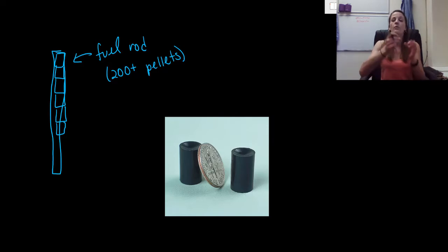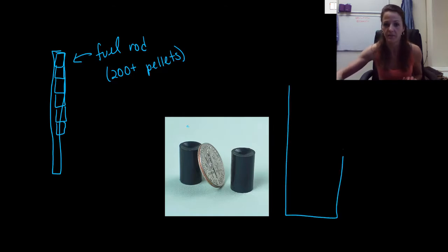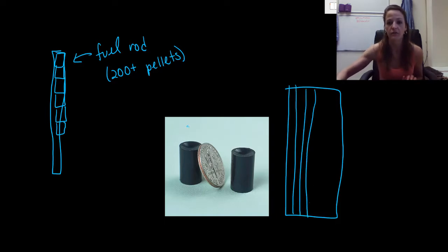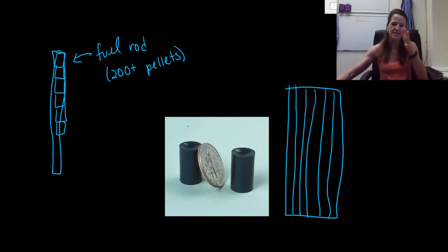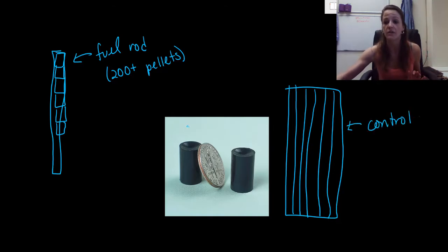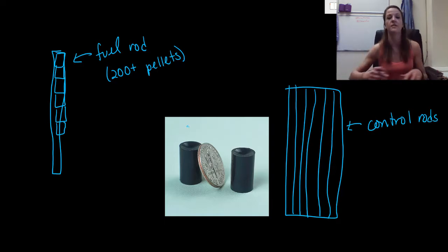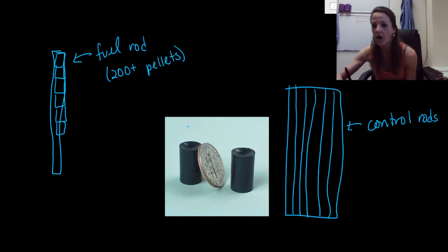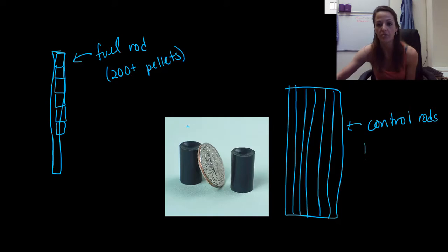We take these fuel rods and put them together in what's called a fuel assembly — basically a big box full of several different fuel rods. But inside this fuel assembly, there are also things called control rods. It's a combination — fuel rods and control rods alternating. Control rods are very, very important. They are what we use to make sure we don't have an uncontrolled nuclear reaction. They are vertical columns made basically of either boron or cadmium.